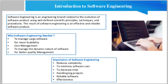Importance of software engineering: reduces complexity. Big software is always complicated and challenging to develop. Software engineering has a great solution to reduce the complexity of any project. Software engineering divides big problems into various small issues and then starts solving each small issue one by one. All these problems are solved independently of each other.